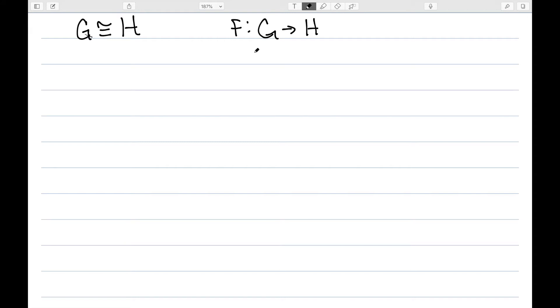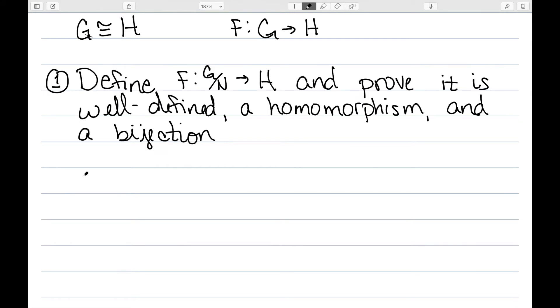However, when the domain is a quotient group, we have two approaches. The first way would be to define a function F going from G mod N to H, and prove it is well-defined, a homomorphism, and a bijection.